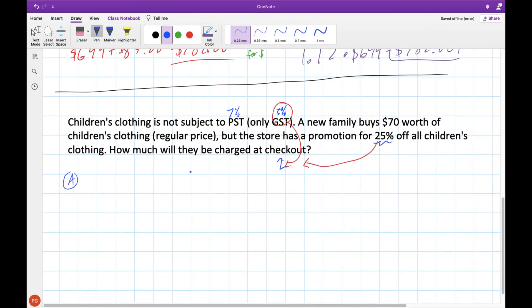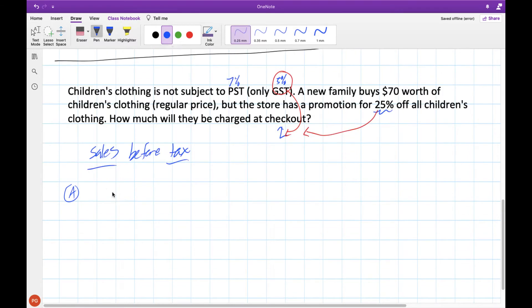Just like our previous one, there are two different ways of doing this question. I'm going to walk through both of them. One thing that we definitely need to recognize when we're talking about these types of questions where we have promotions for a certain percent off, as well as GST, is that we always do the sales before we do the tax. So we're going to do this 25% off first, and then we charge GST afterwards.